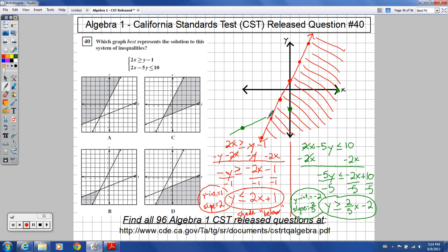So if we graph this line, we connect those dots. And now the shading part. This is going to determine which answer is actually correct.